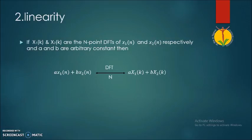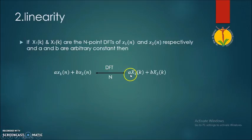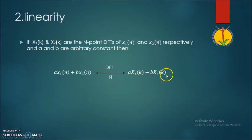The second property is linearity. If X1 of k and X2 of k are the N-point DFTs of x1 of n and x2 of n respectively, and if a and b are arbitrary constants, then the N-point DFT of a·x1(n) + b·x2(n) is equal to a·X1(k) + b·X2(k). That is, the DFT of a linear combination of sequences equals the same linear combination of their individual DFTs.